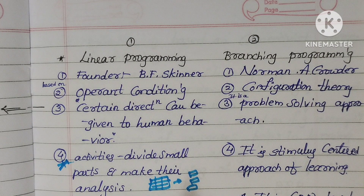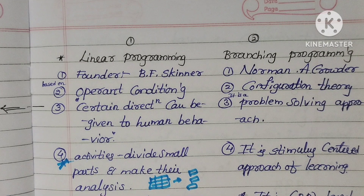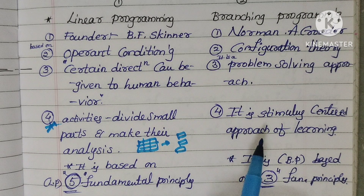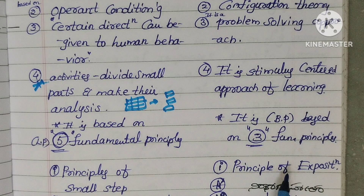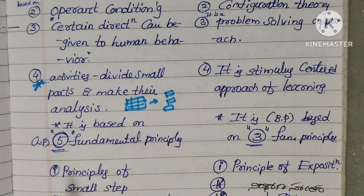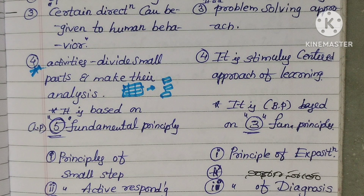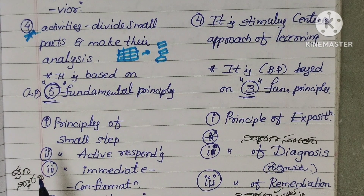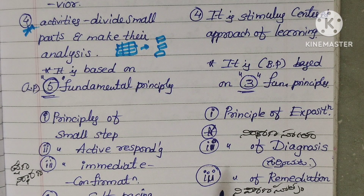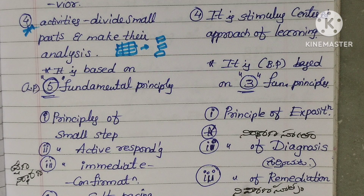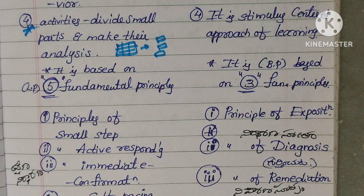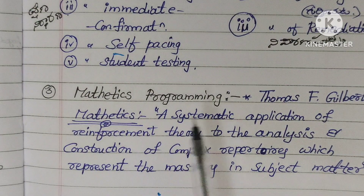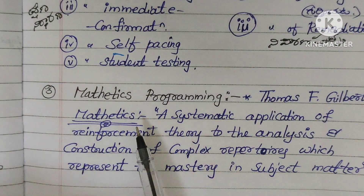Branching programming is a stimulus-centered approach of learning. It is based on three fundamental principles: Principle of Diagnosis, Principle of Remediation, and Principle of Exposition.